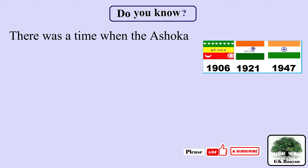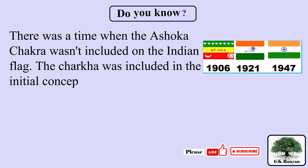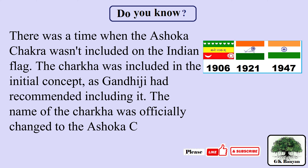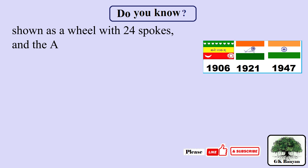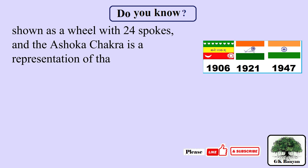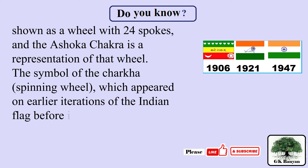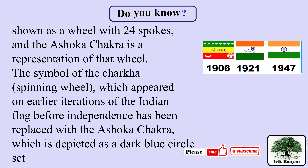There was a time when the Ashoka Chakra was not included in the Indian flag. The Charkha was included in the initial concept as Gandhiji had recommended it. The name was officially changed to the Ashoka Chakra on July 22, 1947. The Dharma Chakra is represented as a wheel with 24 spokes, and the spinning wheel symbol from earlier iterations of the Indian flag was replaced with the Ashoka Chakra — a dark blue circle set against a white background.